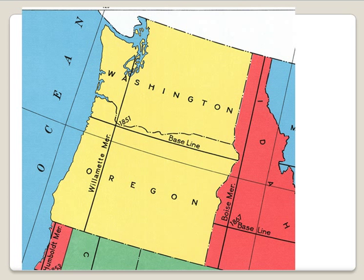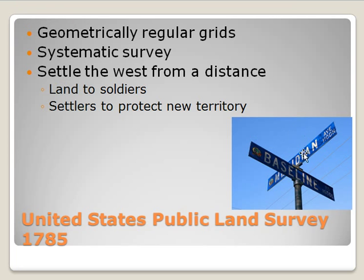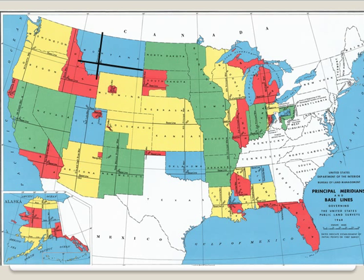Zooming in on Oregon and Washington, we have the Willamette Meridian. In Idaho, the meridian is called the Boise Meridian. There are a couple in California including the small Humboldt Meridian. The Willamette Meridian is crossed by a baseline. In Colorado there's a road called Baseline that runs through the state, and in Oregon there is a street called Meridian — which is the Willamette Meridian location — and even a road called Baseline, which would be the origin of one of these grid systems.